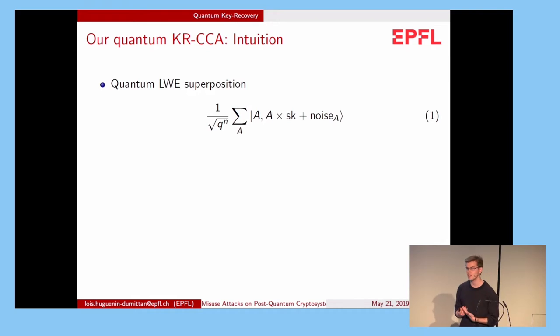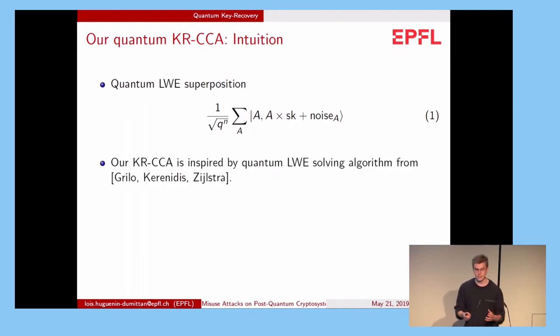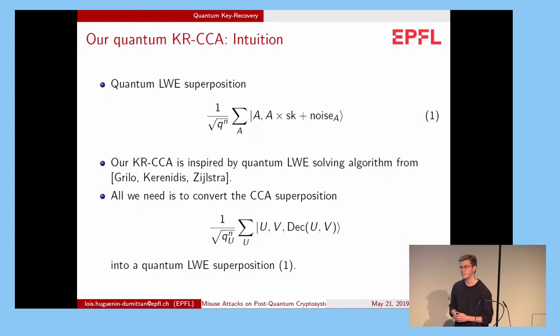Now we can consider a quantum LWE superposition where we get a superposition of LWE samples, for example, for every possible value of A. And it turns out that there is an efficient algorithm to recover the secret key given such an input, designed by Grilo, Kerenidis, and Zijlstra. They can recover the secret key with a good probability. But the problem is that in this chosen ciphertext attack model, we get this type of superposition here. So the challenge is to convert this quantum state into this quantum LWE superposition given in equation 1. That's pretty much what our attack does.